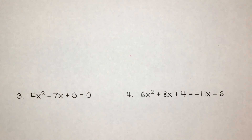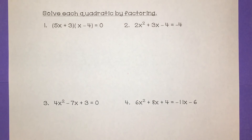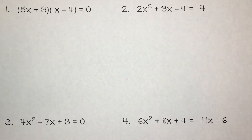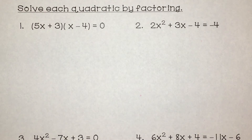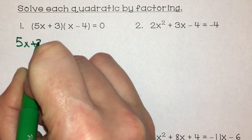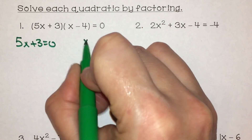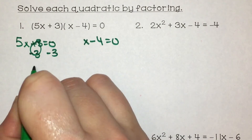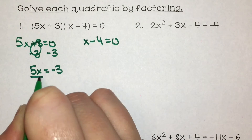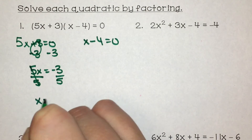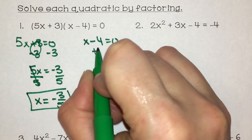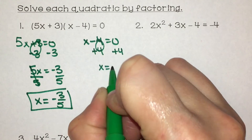I'm going to have you do 4 problems that are very similar to the ones I just did with you. When you're ready, pause it here, try out the problems, and when you're ready I'll go through the answers with you. For the first practice problem, we have 5x plus 3 equals 0 and x minus 4 equals 0. I subtract 3 on both sides to get 5x equals negative 3, then divide both sides by 5 to get x equals negative 3 fifths. My other solution: I add 4 to both sides to get x equals 4.